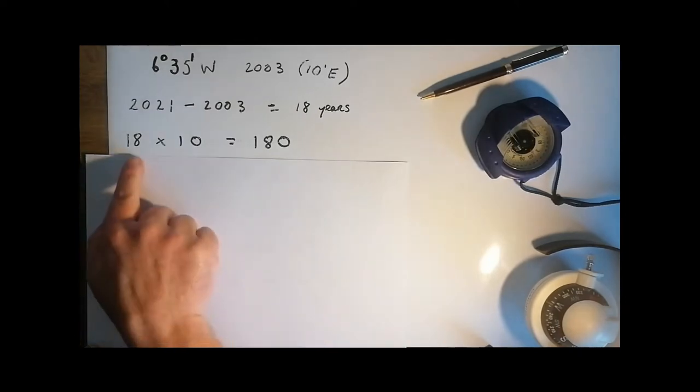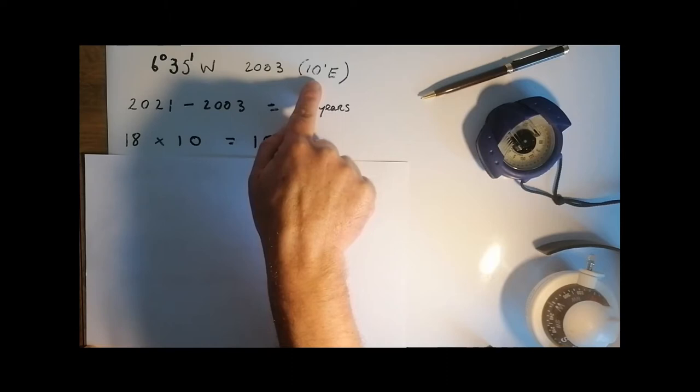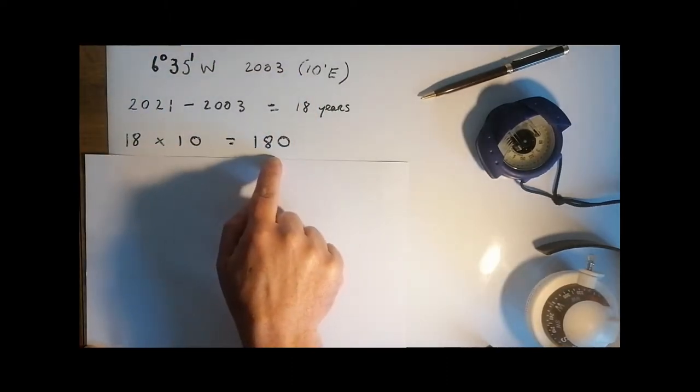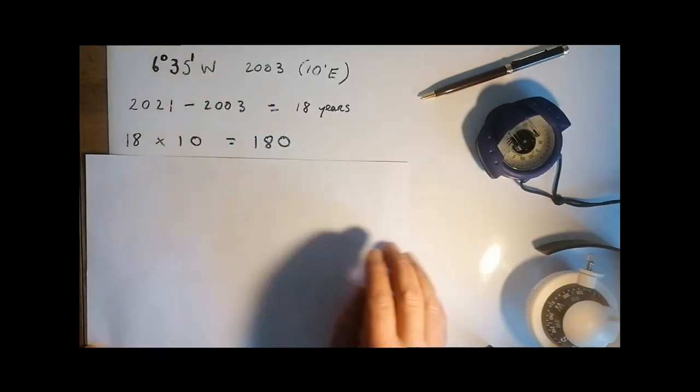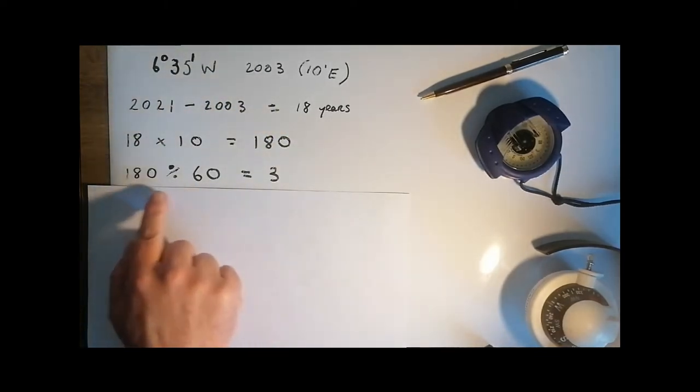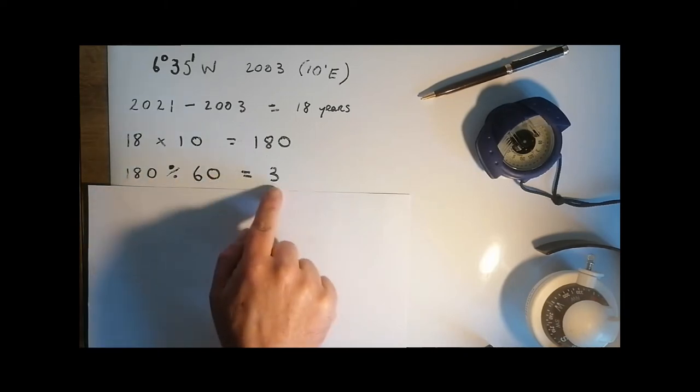We then multiply 18 by 10, which gives us 180 minutes. Then we need to convert. So we divide 180 by 60, and that gives us 3 degrees.